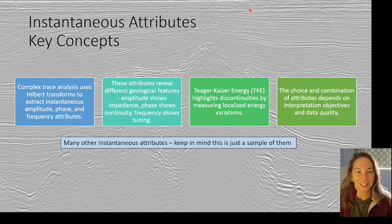The Tiger Kaiser energy, like I just mentioned, it's really great for highlighting discontinuities and measuring the localized energy variations and the choice and combination of the attributes. The way you want to parameterize them, you always want to make sure that you're doing it, keeping in mind the quality of your data and also the purpose of your seismic interpretation.